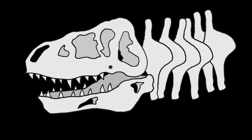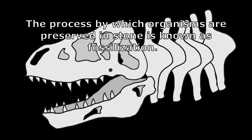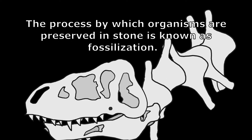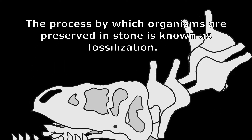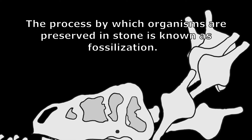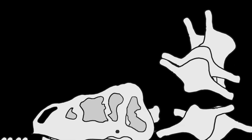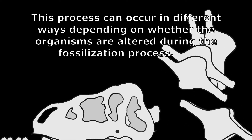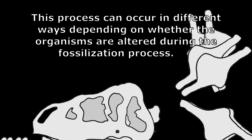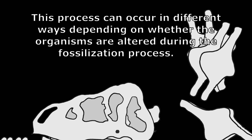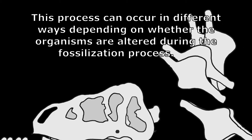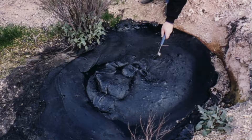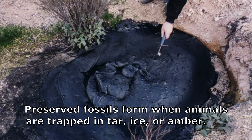The process by which organisms are preserved in stone is known as fossilization. This process can occur in different ways depending on whether the organisms are altered during the fossilization process. Preserved fossils form when animals are trapped in tar, ice, or amber.